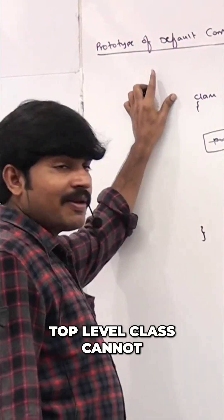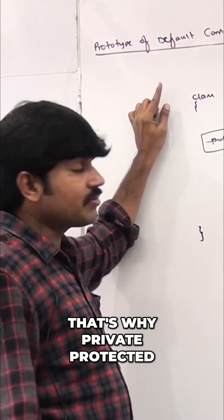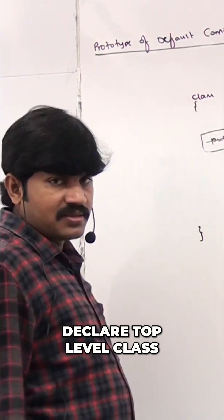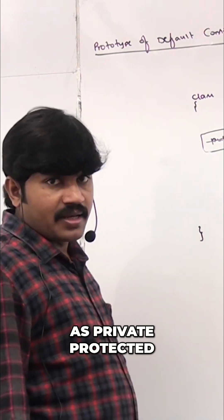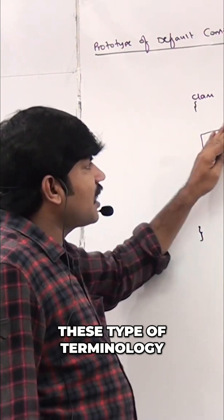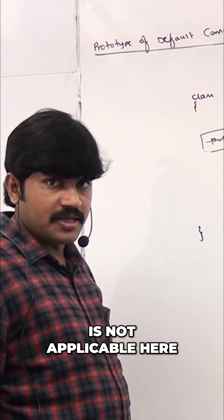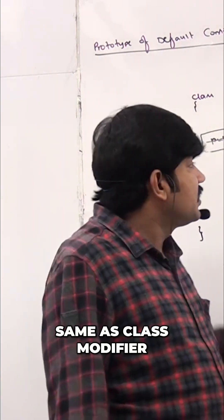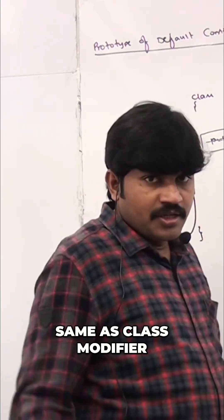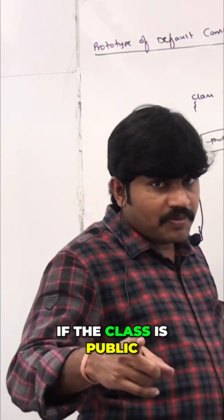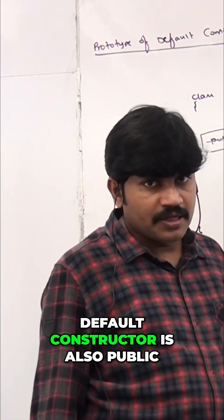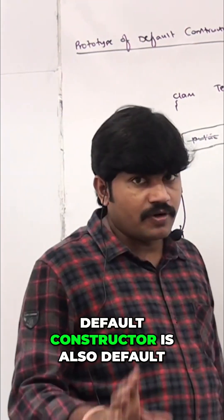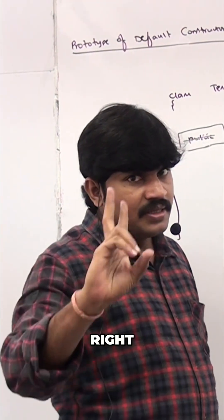A top-level class cannot be protected. That's why private and protected are meaningless here, because you can't declare a top-level class as private or protected. Final, static — this type of terminology is not applicable here. So, the default constructor access modifier is the same as the class modifier. If the class is public, the default constructor is also public. If the class is default, the default constructor is also default.